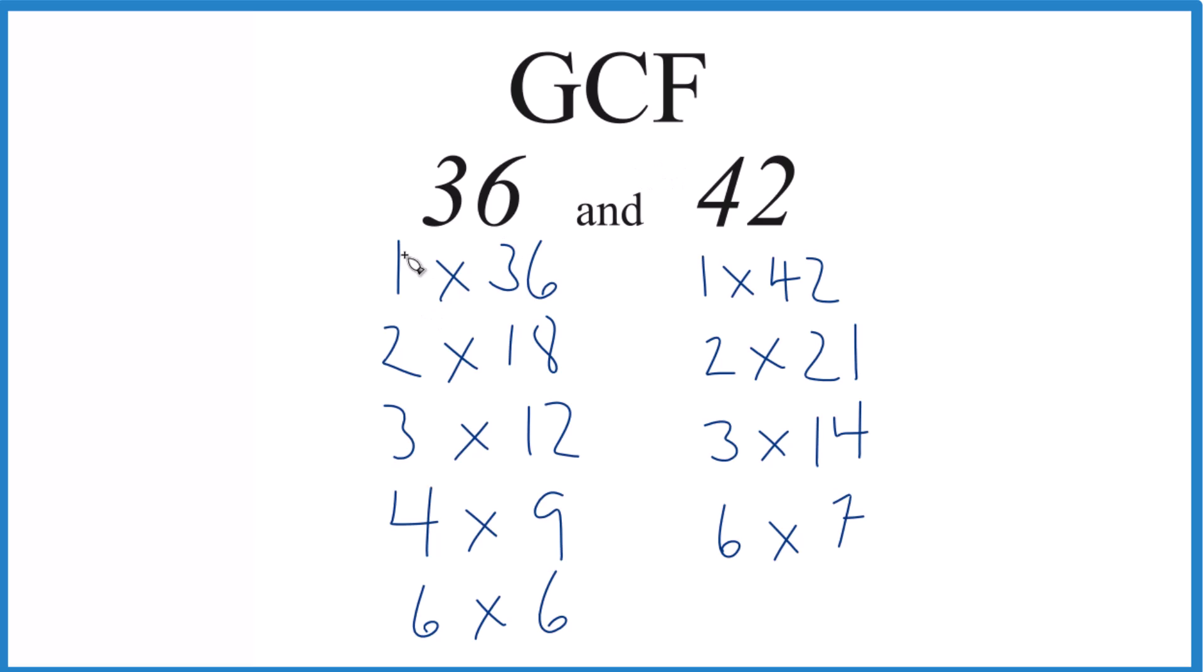Now we see what's in common. 1, that goes into 36 and 42 evenly. 2, 3, that goes in. I don't see 4, but I see 6, and I think 6, that is the greatest common factor.